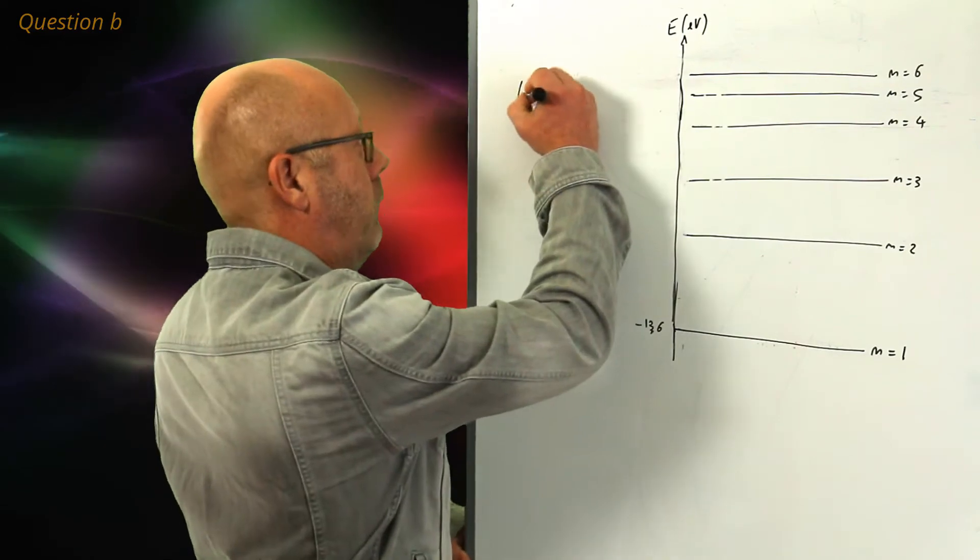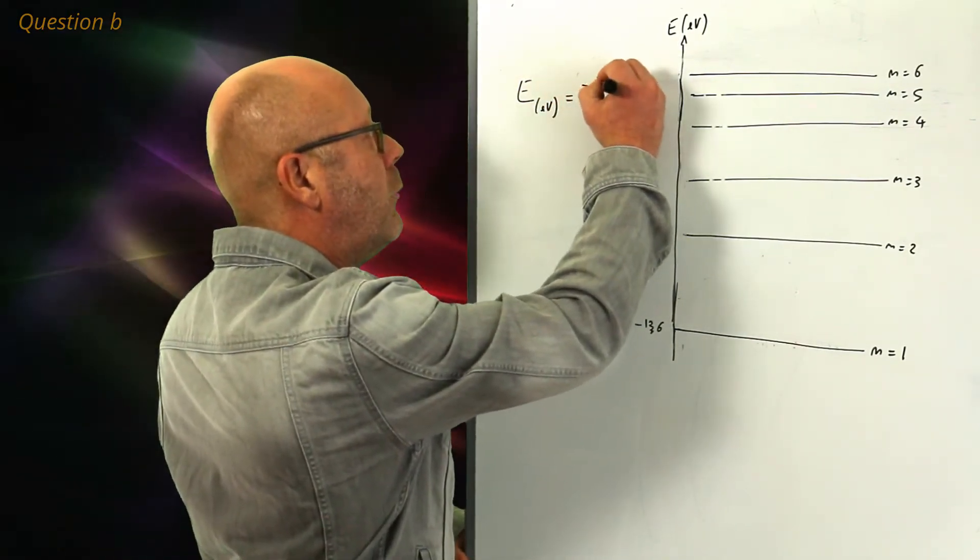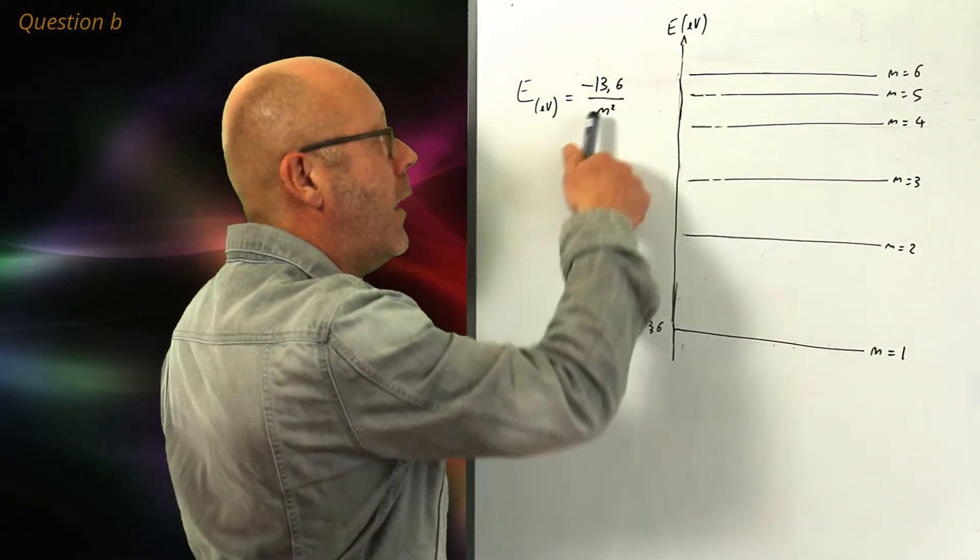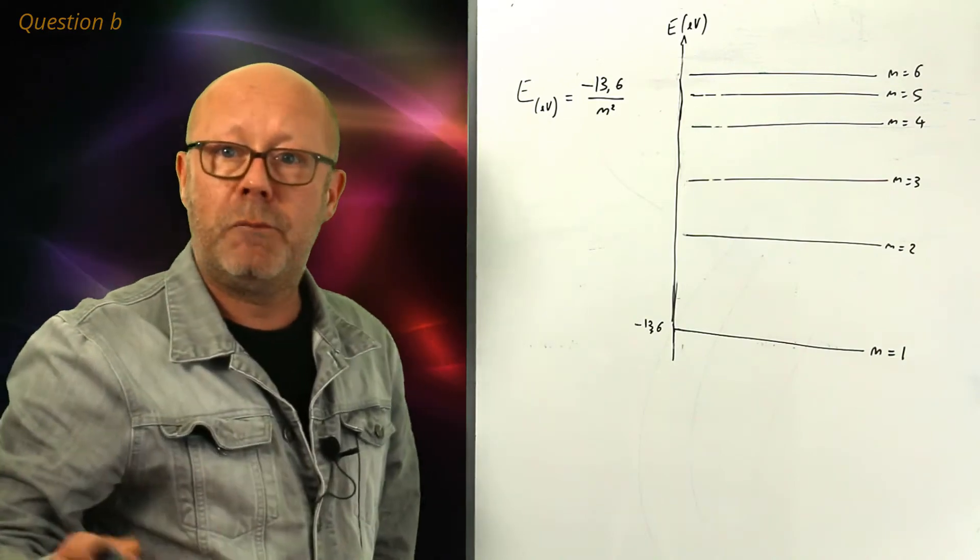This equation is E in electron volts is equal to minus 13.6 divided by n squared, where n is the number of the level, 1, 2, 3. It also calls a principal quantum number.